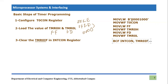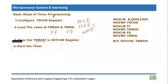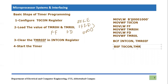The fourth step is to start the timer. We know there is a specific bit — the most significant bit of the Timer Zero Control Register — that turns the timer on. To start it, we use: BSF T0CON, TMR0ON. This sets that bit to one and the timer begins counting.